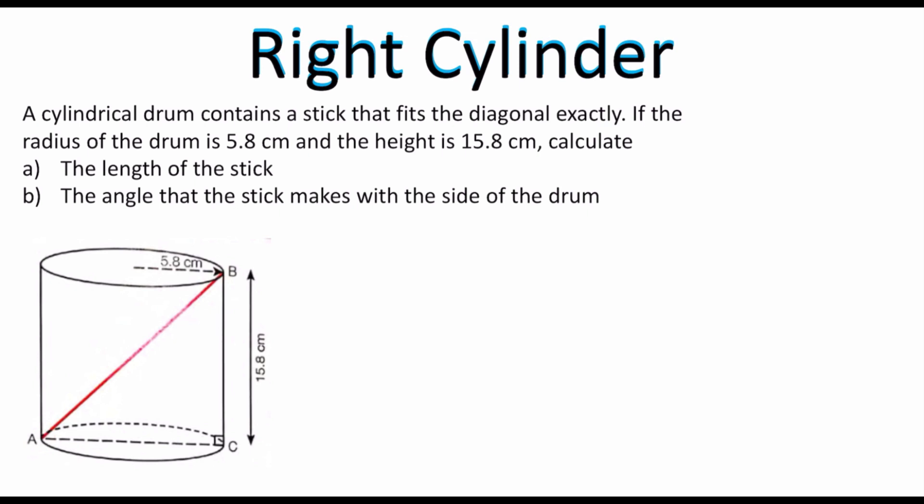A cylindrical drum contains a stick that fits the diagonal exactly. If the radius of the drum is 5.8 centimeters and the height is 15.8 centimeters, calculate the length of the stick and the angle that the stick makes with the side of the drum. The first thing we have to do is figure out the length of the stick, which is basically the diagonal shown in red on the screen.